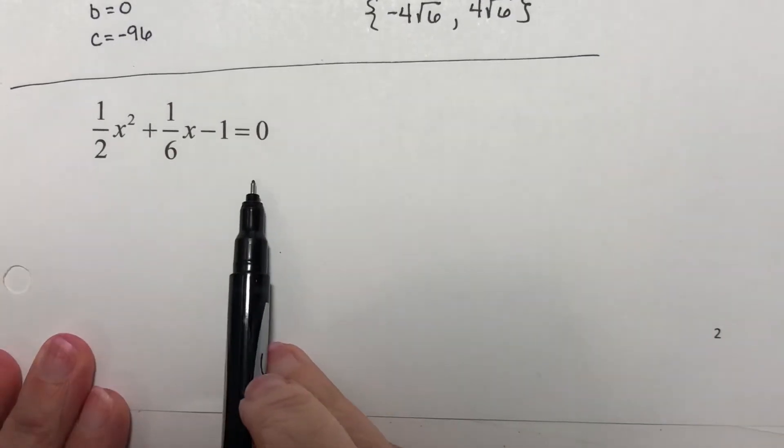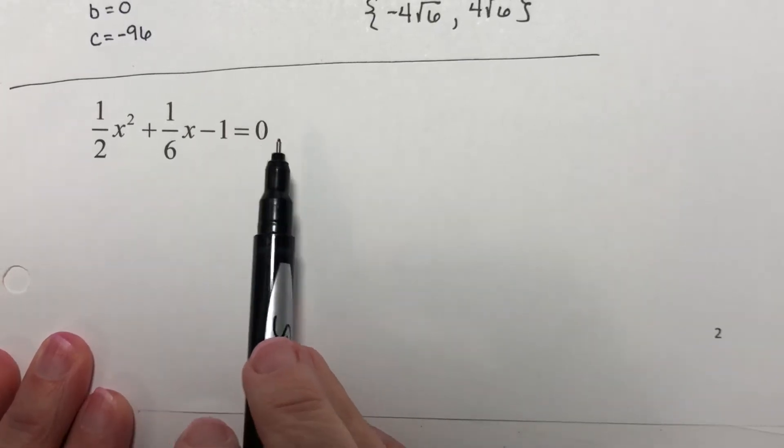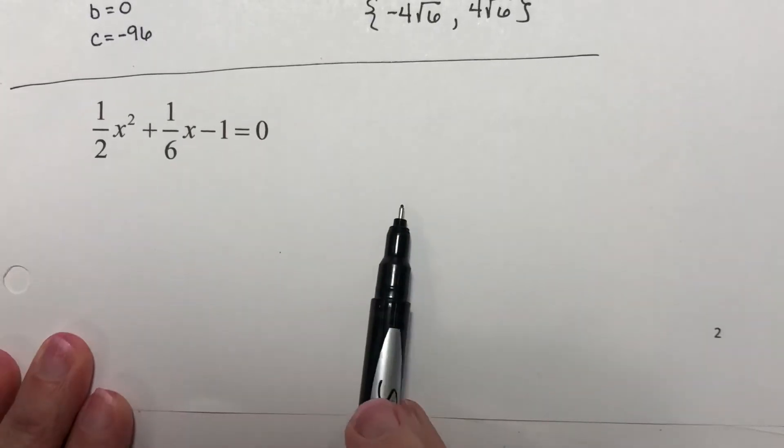This is a quadratic. I have a square, an x, a constant equal to 0. It's already in the right form.